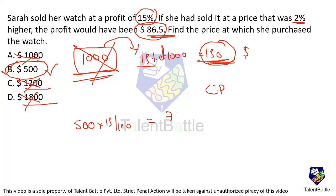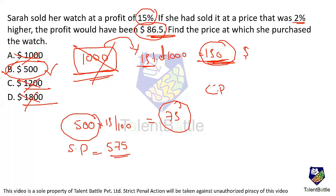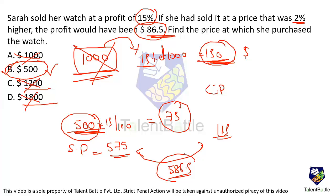To verify with $500: 15% of 500 = $75 profit, so SP = $575. Increasing by 2% gives 2% of 575 = $11.5, making the new SP = $586.5. Profit = 586.5 − 500 = $86.5. Confirmed — the answer is Option B.